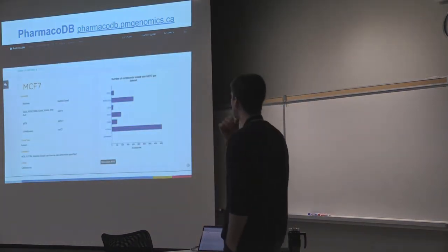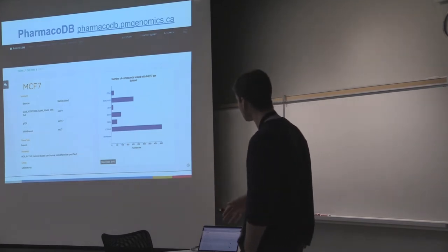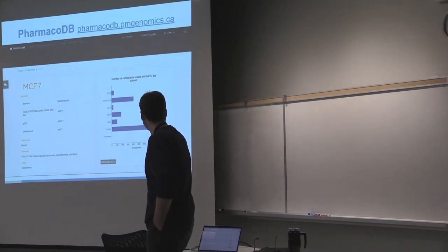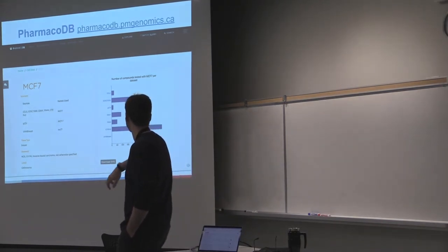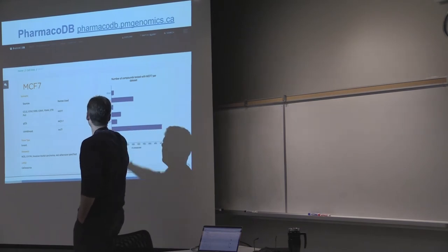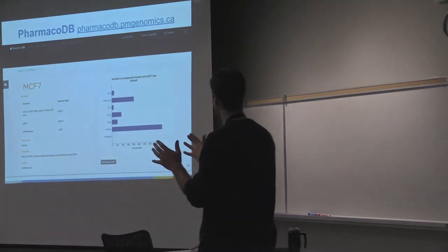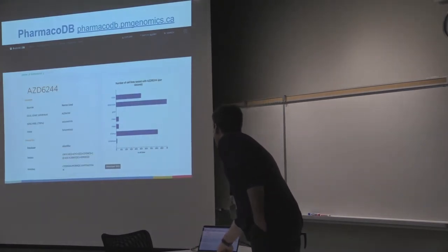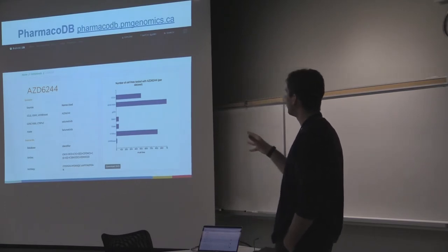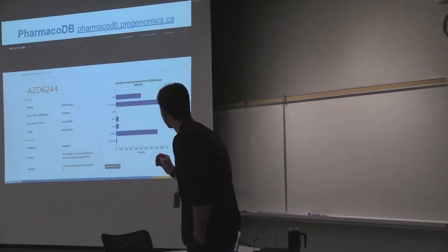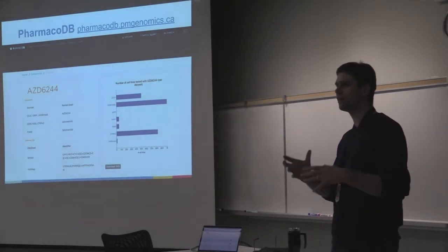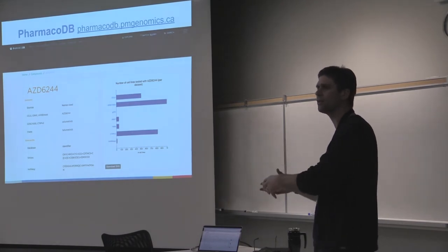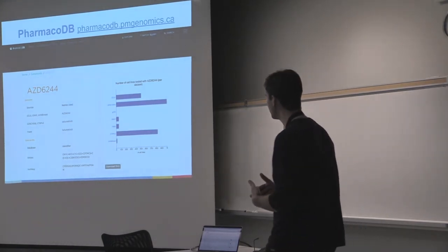For example, when you type MCF7 — a breast cancer cell line — you can see it's been tested with about 400 drugs in the CTRPV2 dataset, and fewer in other datasets. Here, AZD6244 is a drug also called selimatinib. For a computer, it's not obvious that these names refer to the same compound, so there's a lot of curation behind the scenes. That drug has been tested across many datasets and cell lines.